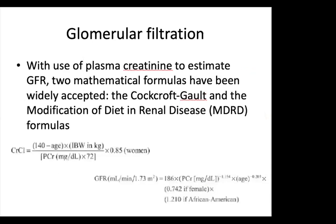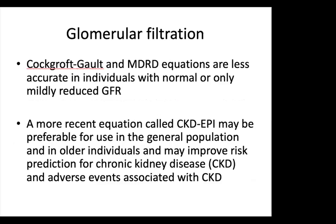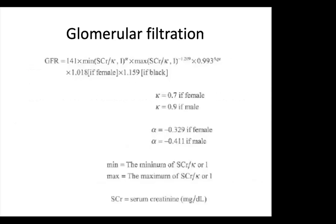Using plasma creatinine to estimate GFR, two formulas have been widely accepted: the Cockroft-Gault and the MDRD formulas. The Cockroft-Gault equation overestimates creatinine clearance and is no longer widely used clinically except for drug dosing estimates. The MDRD formula is more accurate and accounts for severe renal impairment. However, both are less accurate in individuals with normal or only mildly reduced GFR. A more recent equation, the CKD-EPI, may be preferable for the general population and older individuals.